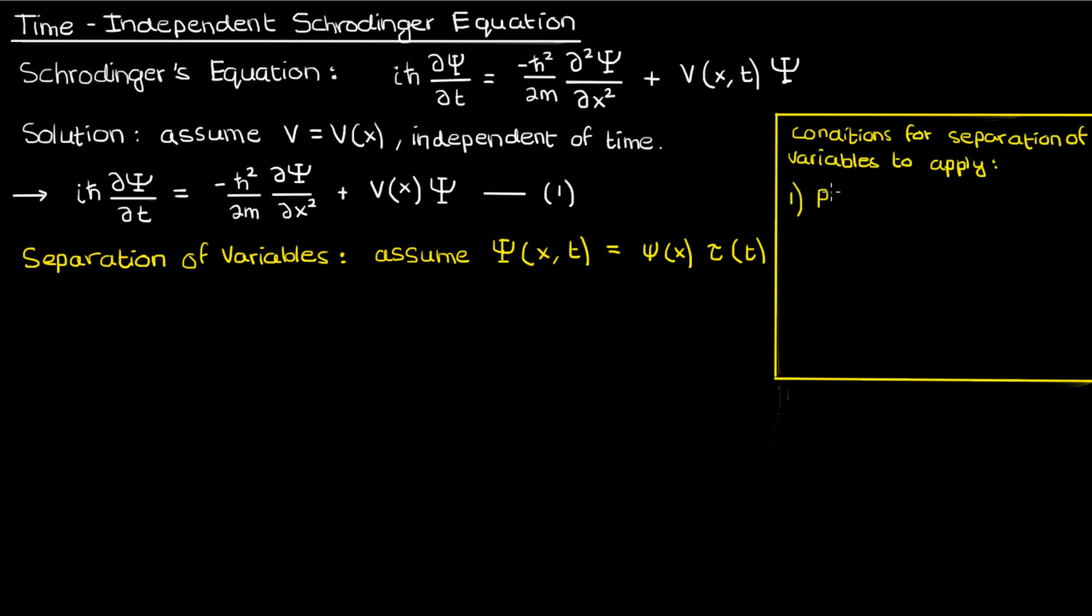One of those conditions is that the PDE we're solving must be linear and homogeneous. If you look at the Schrödinger equation we're solving this is true, the PDE is linear in the wave function we're solving for, it's linear in psi. There is no psi squared or derivative of psi whole squared term, it's all linear in psi. The PDE is also homogeneous, there's no constant or function being added that doesn't include psi.